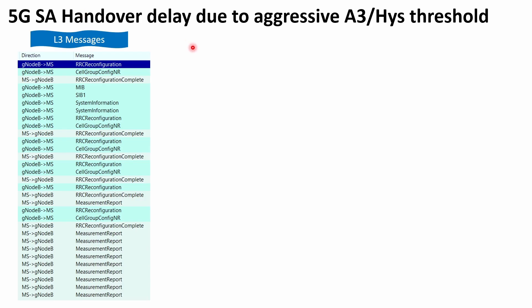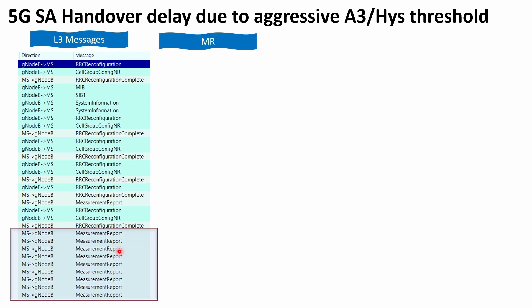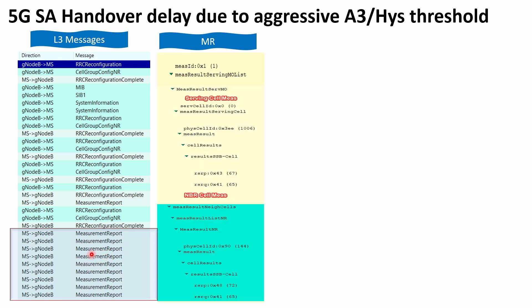This first example is for a 5G standalone handover where there was a delay and the handover was not triggered. This case was specifically for an A3 handover event, which is intra-frequency in 5G standalone. Initially we didn't know the cause — many measurement reports were being sent by the UE to the gNodeB, however the gNodeB didn't take any handover decision. During analysis, you need to know which event the measurement report maps to and confirm the related parameters like hysteresis, offset, and time-to-trigger.